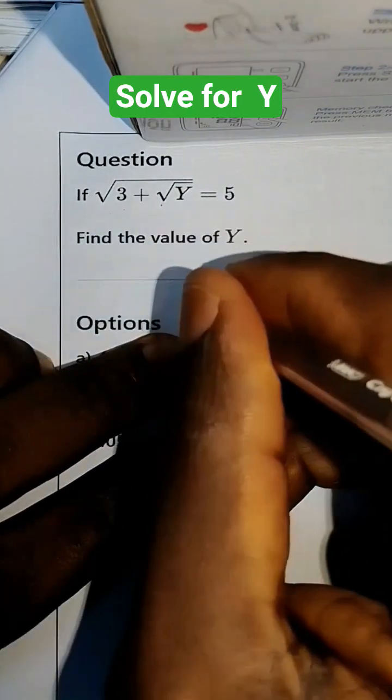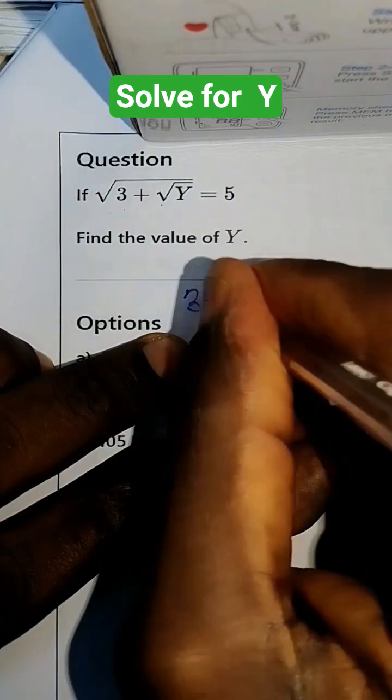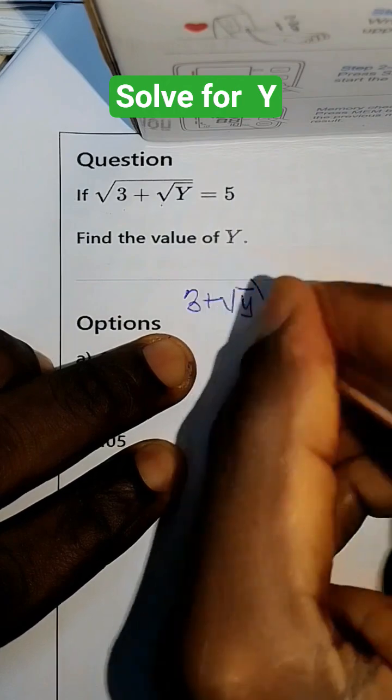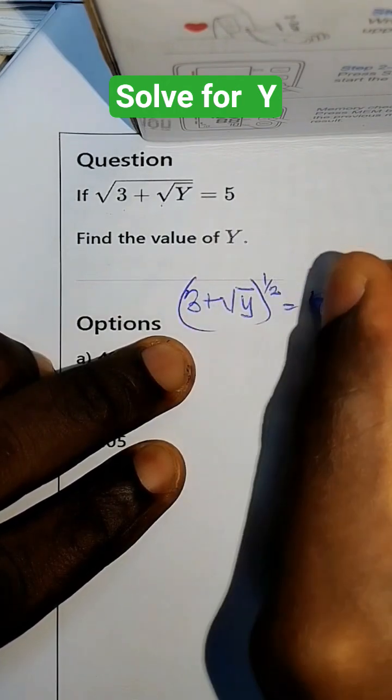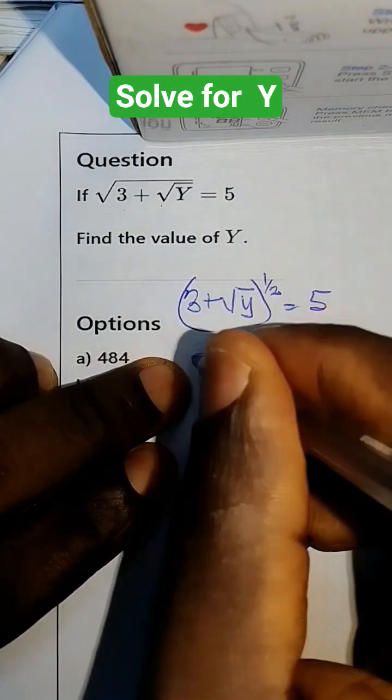To solve this, this basically means 3 plus root y raised to the power half equals 5. We need to square both sides.